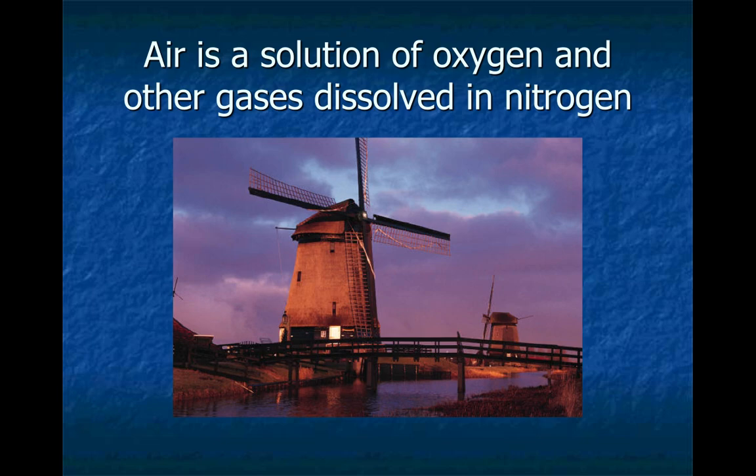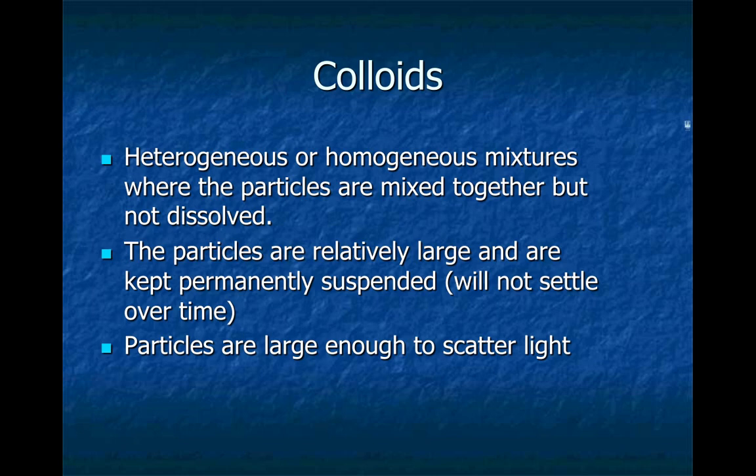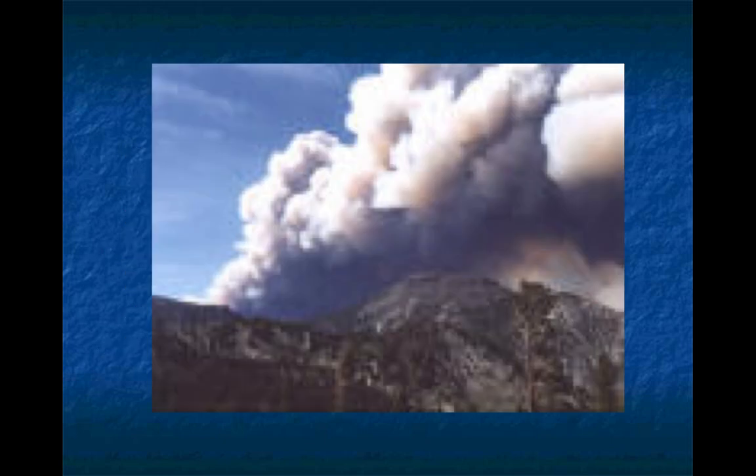After solution, a homogenous type of mixture with really small particles, we're going to go to the next type of mixture which could be either heterogeneous or homogenous depending on the type. We call that a colloid. A colloid is a heterogeneous or homogenous mixture where the particles are mixed together but not dissolved. The particles are relatively large and are kept permanently suspended. That means they do not settle over time. The particles are large enough to scatter light, and this is one way you can tell a colloid apart from a solution. A great example of a colloid is a cloud. Some other ones from a previous screen we looked at - the milk, the toothpaste, and the mayonnaise would be other colloids. So sometimes in a colloid you can see the particles and sometimes you can't.